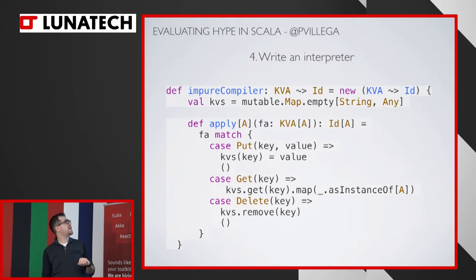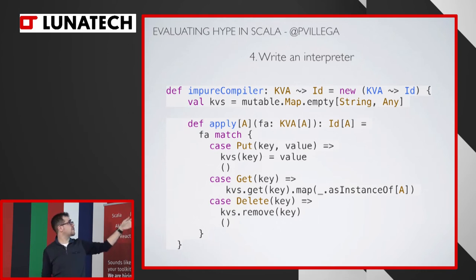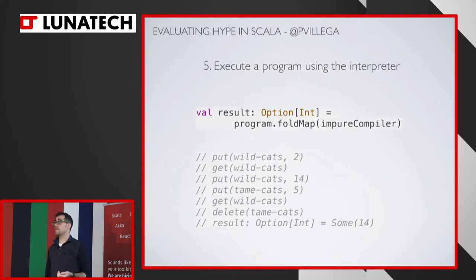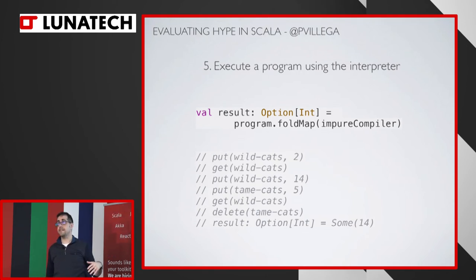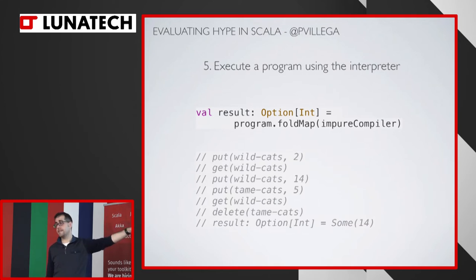Step four: you implement your interpreter. In Free Monad, the interpreter is technically a natural transformation — a way to turn one monad into another — but you can create one by pattern matching over the different members of the algebra and for each one doing something. In this case, using a mutable map to store values. Step five: you execute the program by taking the program and fold-mapping using the interpreter. FoldMap takes this big chunk of flatmaps, folds one by one, and on every step maps it through the interpreter, giving you a result — in this case, a sum of 14.